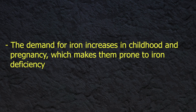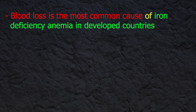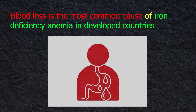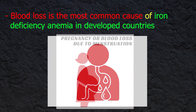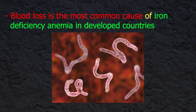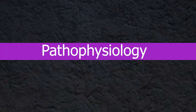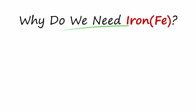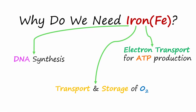The demand for iron increases in childhood and pregnancy, making these groups prone to iron deficiency. Blood loss is the most common cause of iron deficiency anemia in developed countries. In males, it can be bleeding from gastric ulcers or colonic cells. In females, heavy menstrual bleeding causes increased loss from the body. Parasites like hookworm can also cause chronic blood loss.